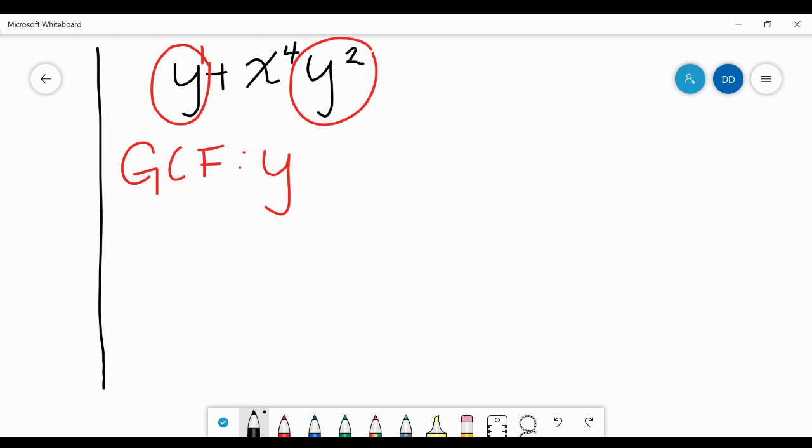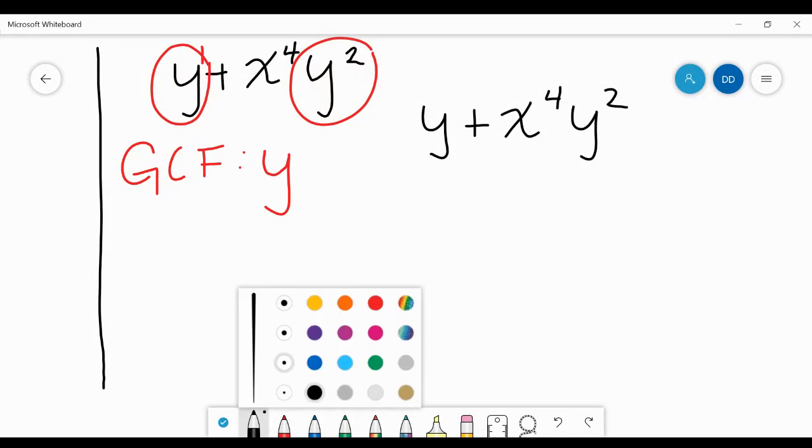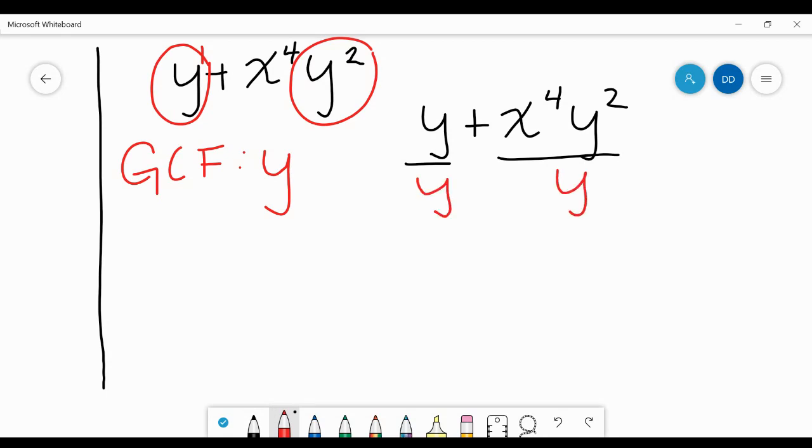So what we're gonna do is divide both of these terms by our GCF of Y. Remember, the GCF always goes on the outside, and then after you divide, that goes on the inside. So Y divided by Y, they both have exponents of 1, so these cancel out, so that means there's a 1 right there. Plus, now you can't divide X to the fourth and Y, so you just bring down X to the fourth. And then Y squared divided by Y to the first, you subtract the exponents, that gives us Y to the first. This is our answer.